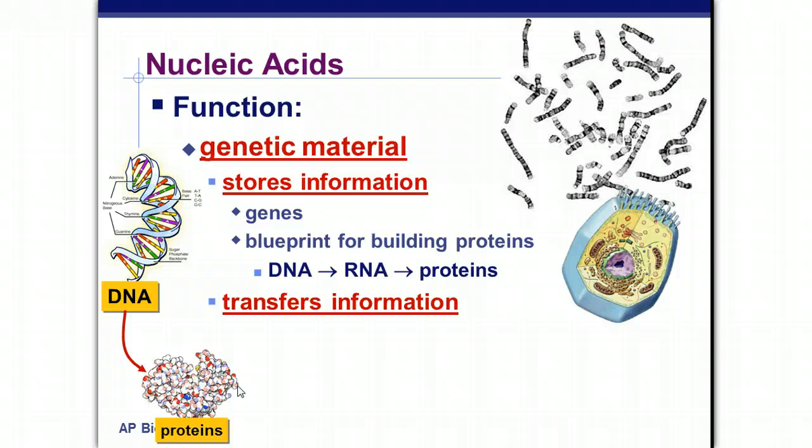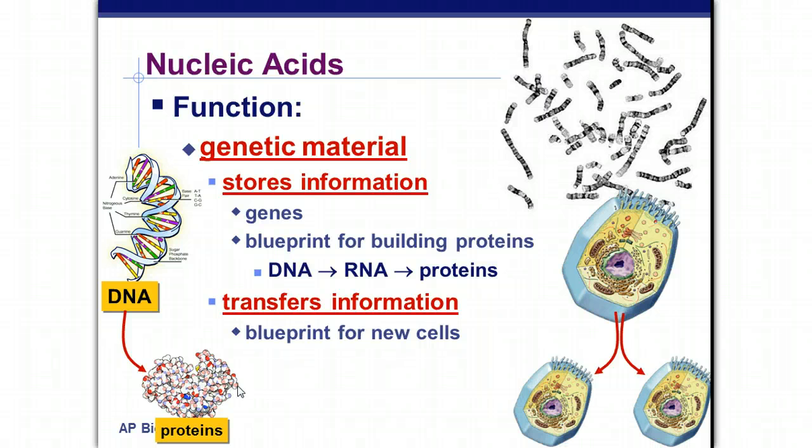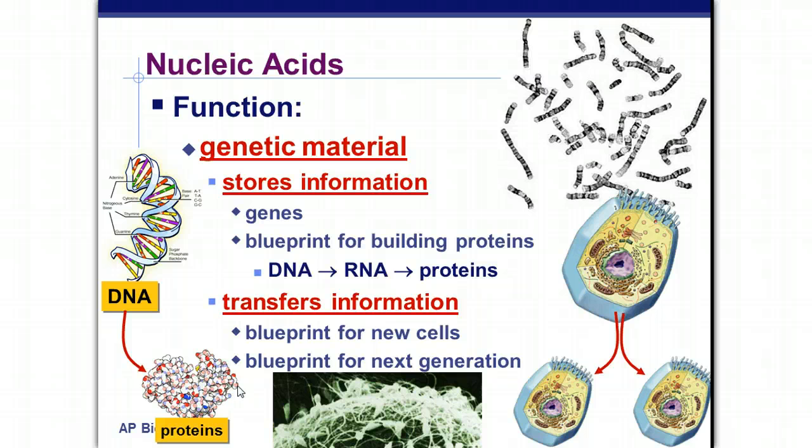So another function of nucleic acid is to transfer information. It can be a blueprint for new cells. So we have a cell and make new cells out of this genetic, this nucleic acid. And it can be a blueprint for the next generation. That's sperm attacking an egg cell.